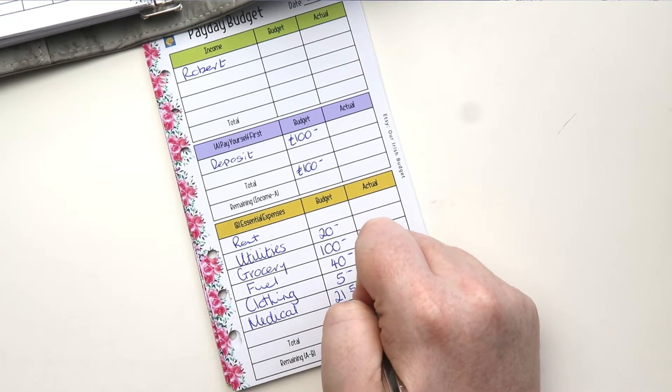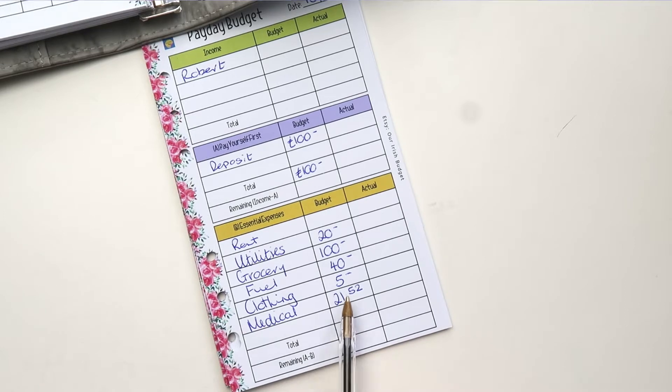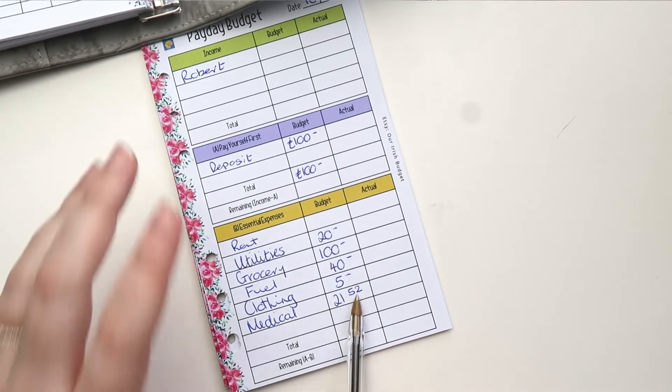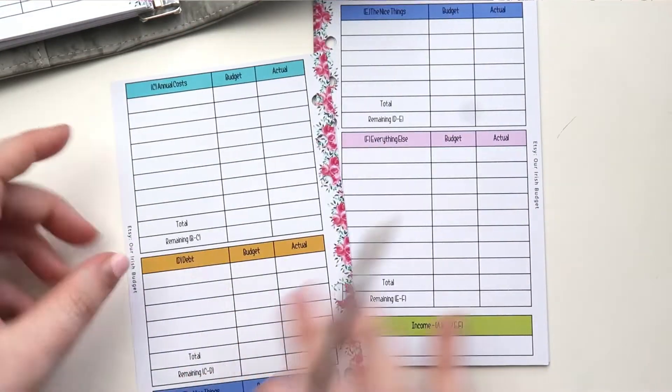Usually we put 10 euros, but because we had an overspend last week, that's where the extra money comes from there. So already, even in our first category, we've overspent from last week. So we have to make an adjustment for this week.